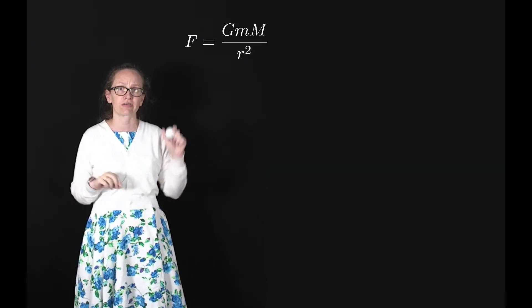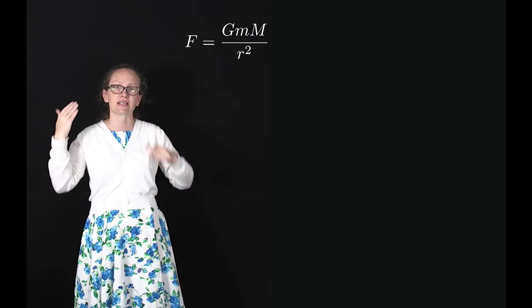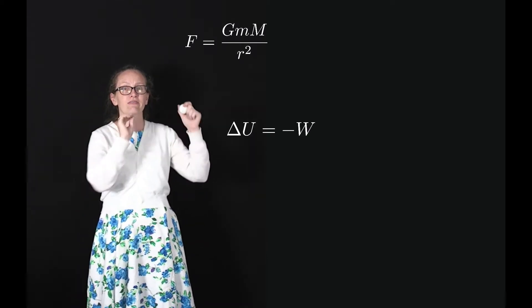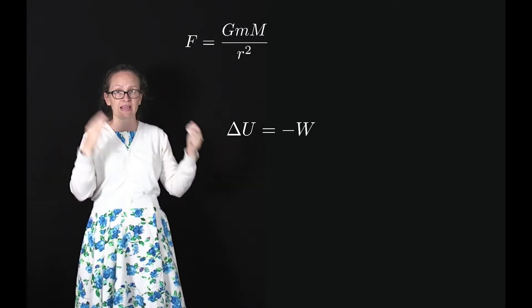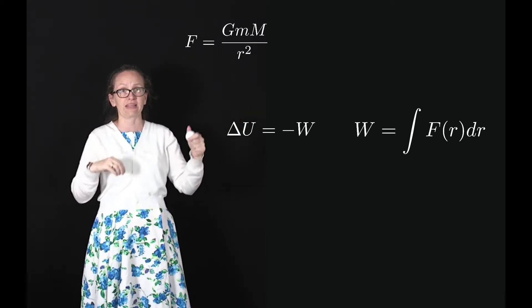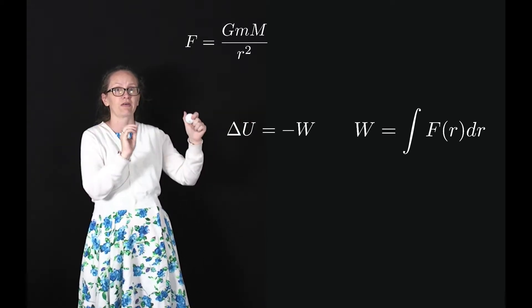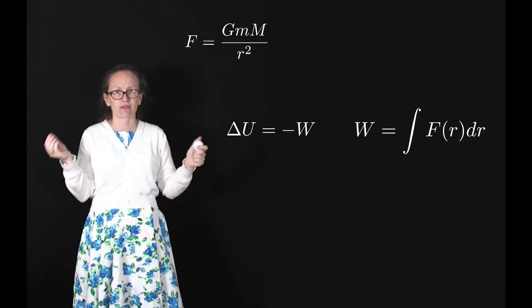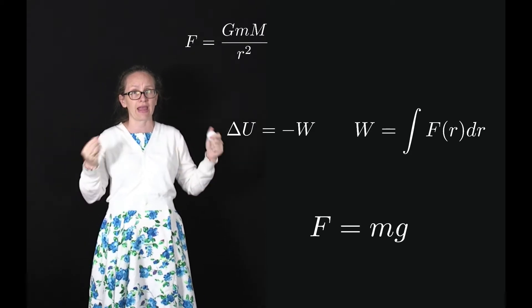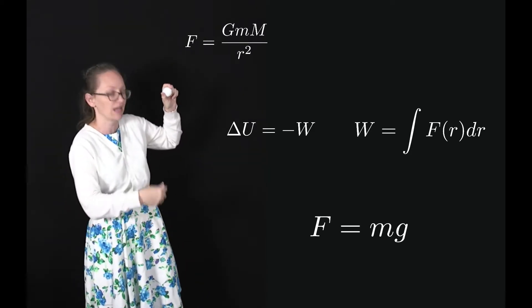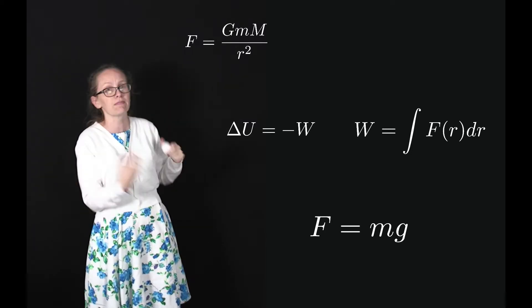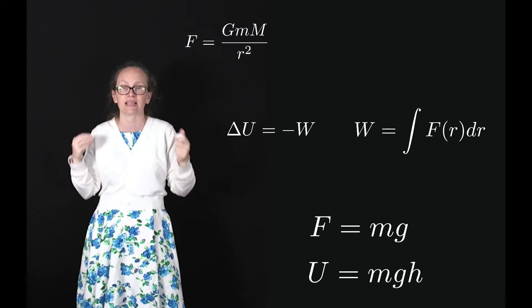When considering gravitational potential energy close to the surface of the earth, we said the change in gravitational potential energy is given by the negative of the work done, and the work done can be calculated by integrating the force over the path — the integral of F dr. Close to the surface we could assume the gravitational force was constant, given by mg, so integrating and taking the gravitational potential energy at the surface as zero gave us U equals mgh.